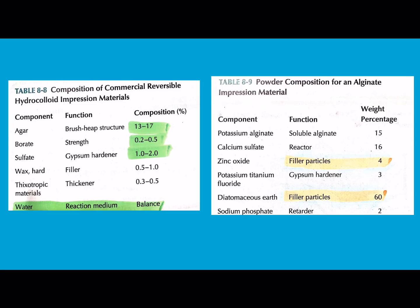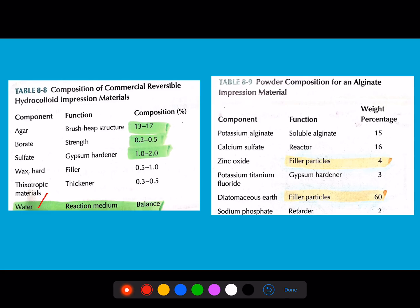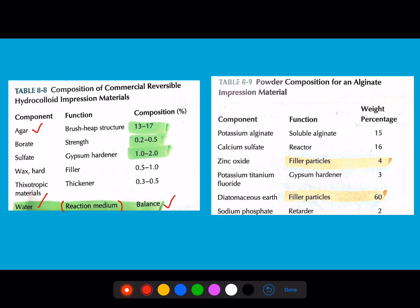The first topic is the composition and individual ingredient function of agar and alginate. The main component present in agar is water — water occupies the major percentage and is also called the reaction medium. If water is not in the options, the next major component is agar itself, which stands second in composition at 13 to 17 percent.